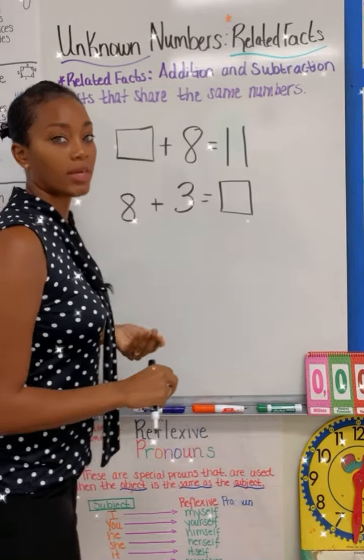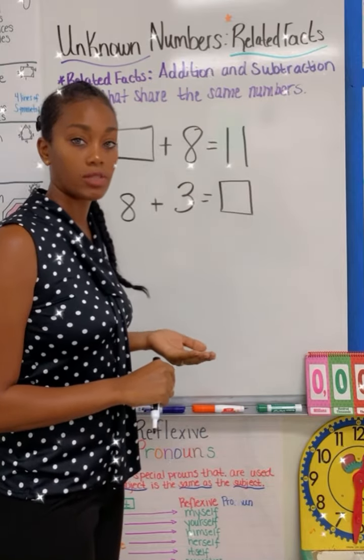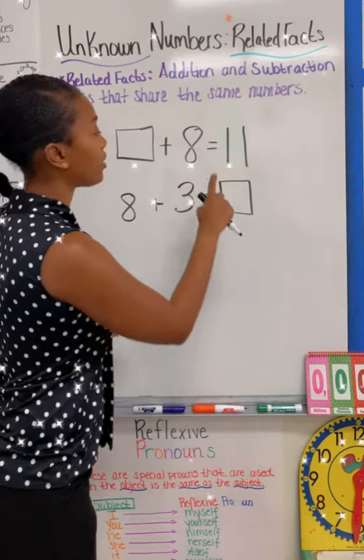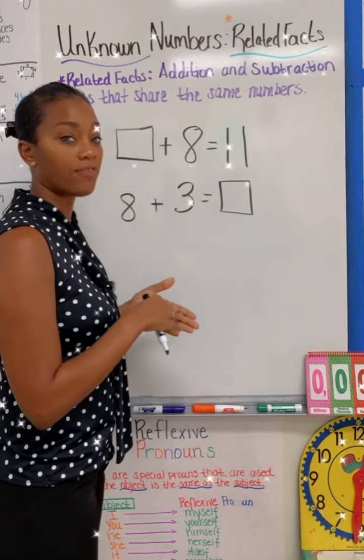So I know you're thinking in your mind, oh, I can use the count on method to figure out my answer. In this case, I don't have to, because I noticed in these set of numbers that there is a related fact.